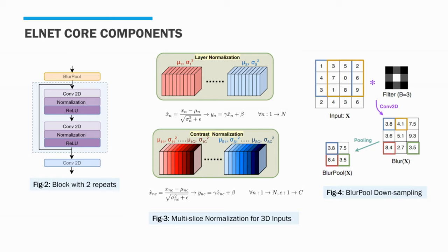In the middle are two possible multi-slice normalization methods utilized in LNET. The normalization is performed on the feature representations of each slice separately. The difference between layer norm and contrast norm are the way the channels are normalized, and we demonstrate in our paper that multi-slice norm boosts performance compared with batch norm. On the right is an example of blur pool downsampling. Blur pool was proposed by Richard Tsong as a replacement for 2D max pooling, applying a low-pass filter on the input before downsampling, making the network more robust to minor shifts in the input.